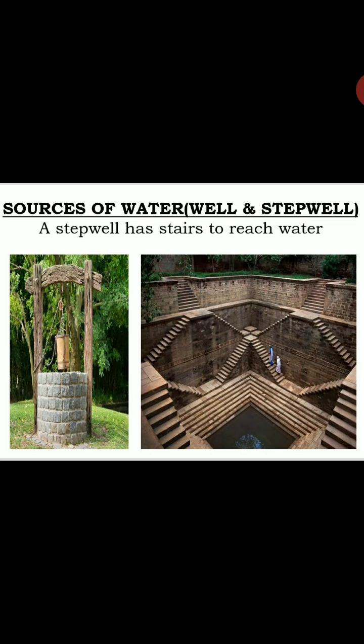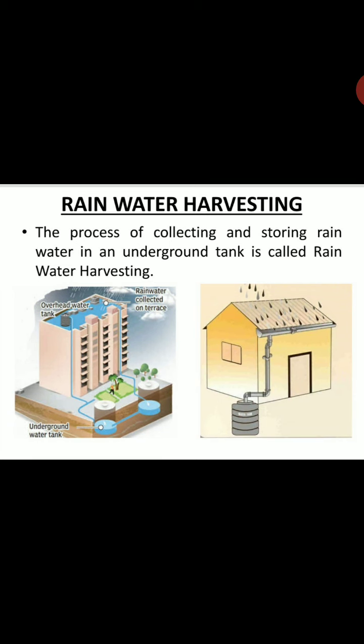Now children, look at these pictures. The first one is well and the second one is stepwell. Well means kua, aur jo second one hai use stepwell ya baoli bhi bola jata hai. In ke beech mein yahi difference hai ki a stepwell has stairs to reach water — stepwell mein stairs hote hain paani bharne ke liye.